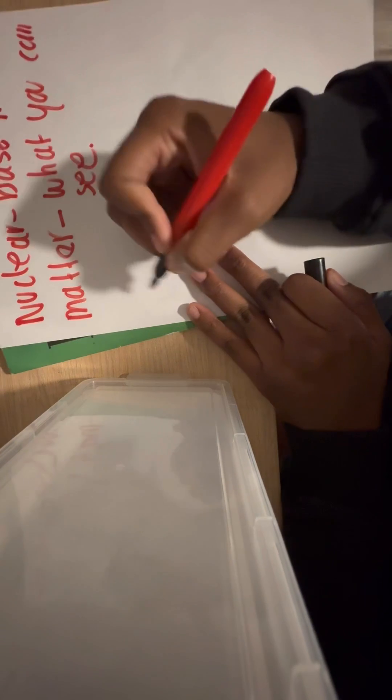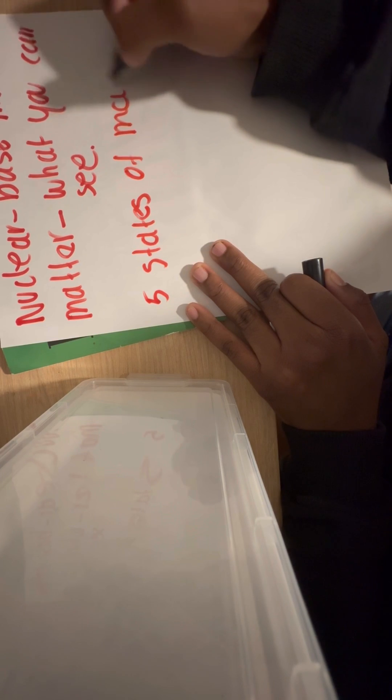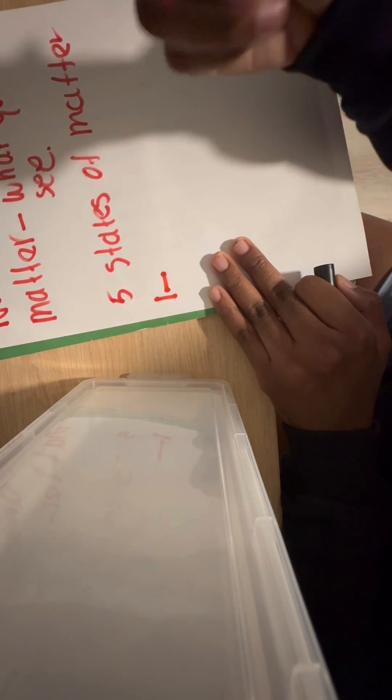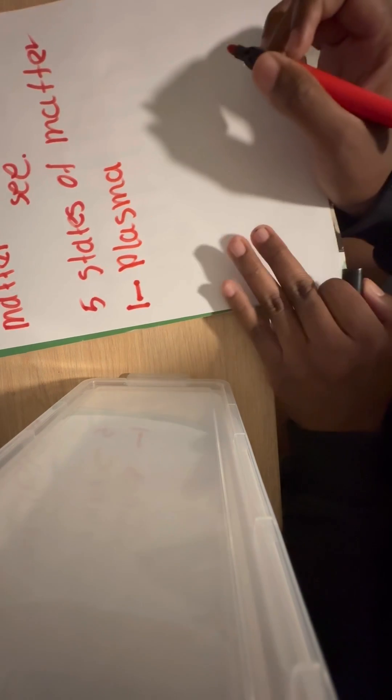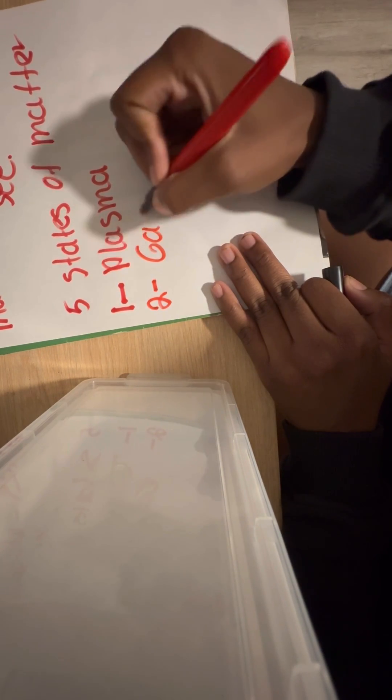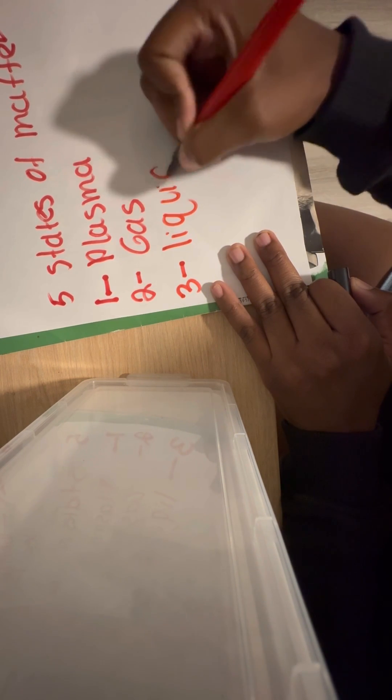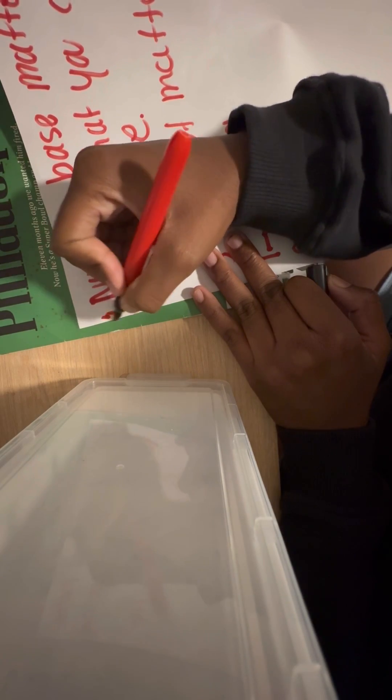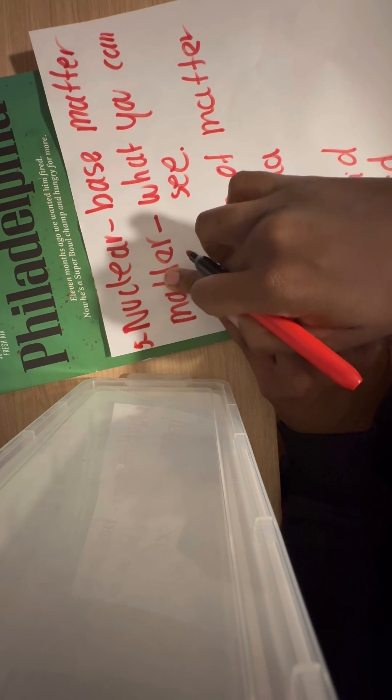There are five states of matter. The first is plasma. The second is gas, the third is liquid, the fourth is solid, the fifth is nuclear. Just because you can't see it doesn't mean it doesn't exist.